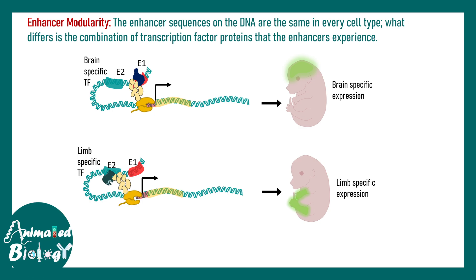The moral of the story: an enhancer is just a DNA element, quite similar between different cell types. But the output of the enhancer — its influence on a gene body — is totally governed by the things that are bound to it or interacting with it, and the way the enhancer interacts with the promoter and polymerase.